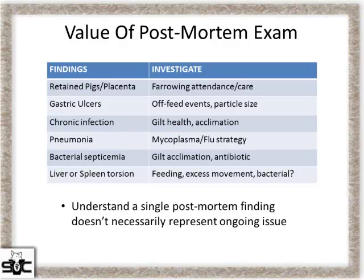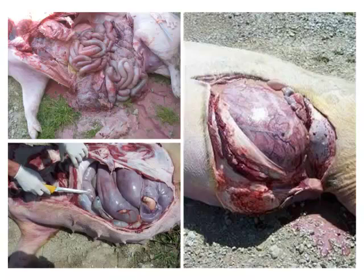That can really focus your area of intervention — whether that's simply sleeving more sows and documenting that they're done, a change in antibiotic program based on bacterial infection, or a change in feed based on ulcers. It gives you more information to make those calls. Remember that a single post-mortem finding isn't indicative of what's going on in the herd — numbers help add confidence. This is an example of a uterine retained pig with uterine infection — a pretty easy one to call as the cause of death.